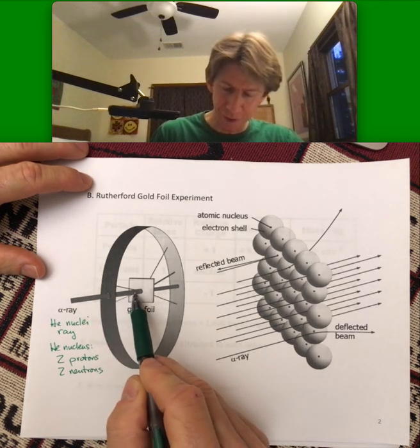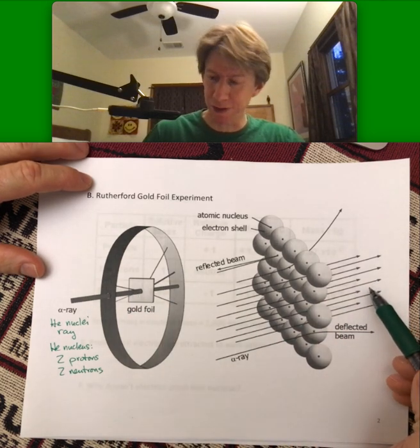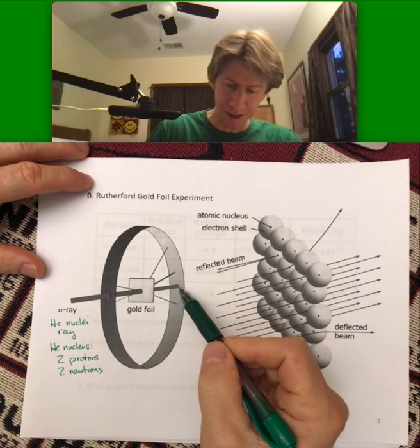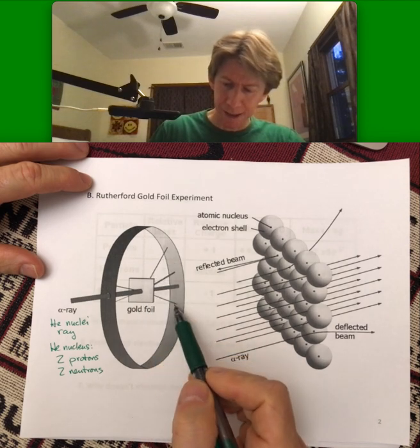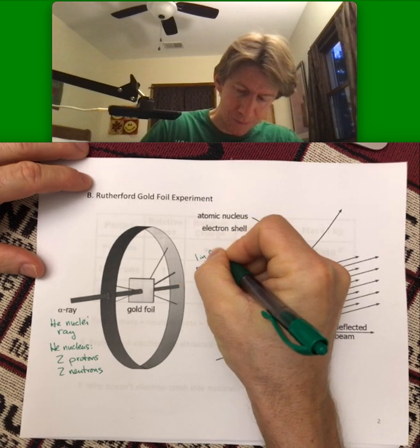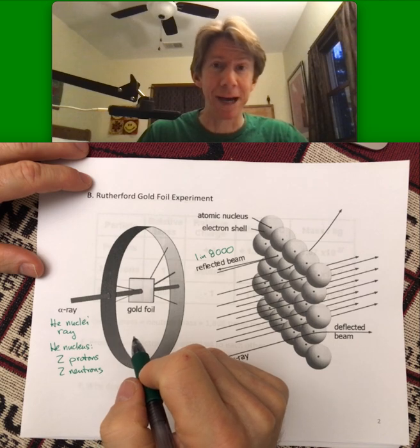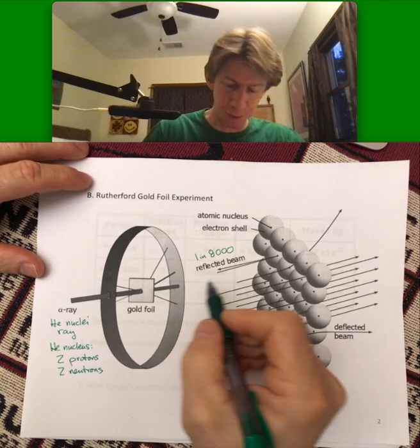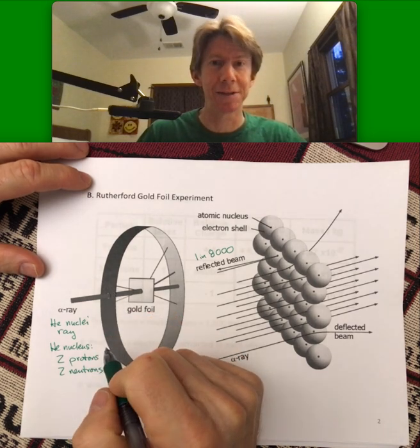And the vast majority of the helium nuclei in the alpha ray went straight through and are right here on this image. A few of them were deflected. And approximately 1 in 8,000 was basically bounced off the gold foil directly back, right in this area right here where the alpha ray was coming in.